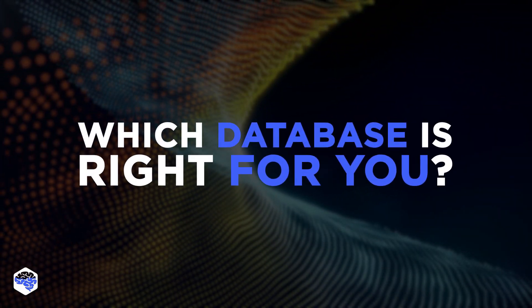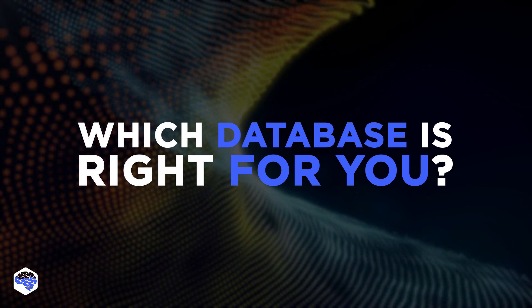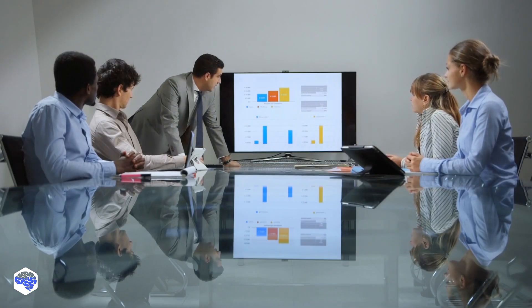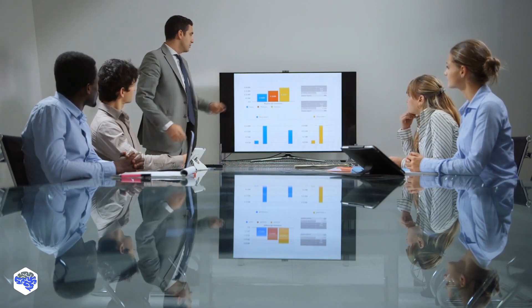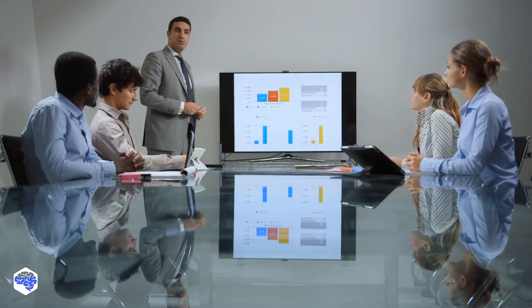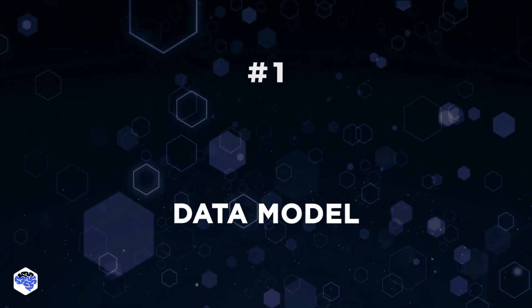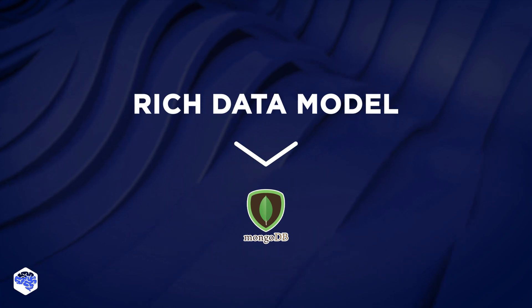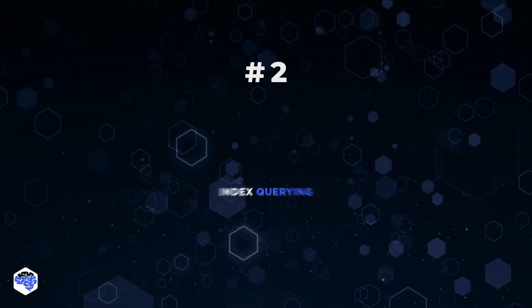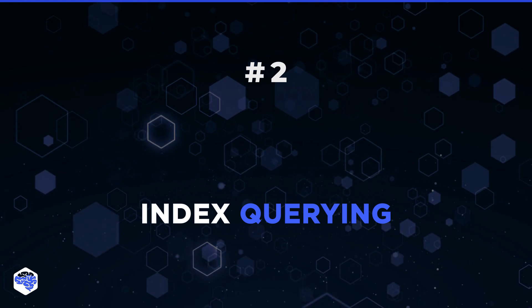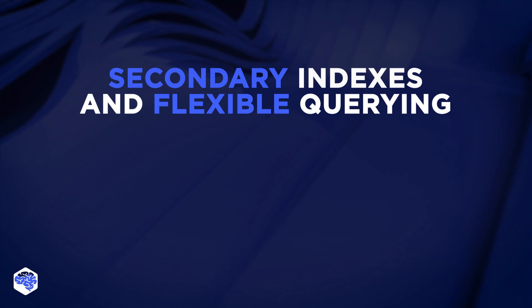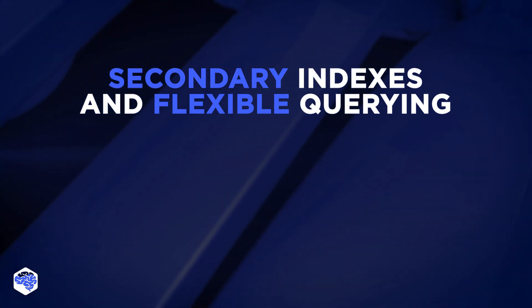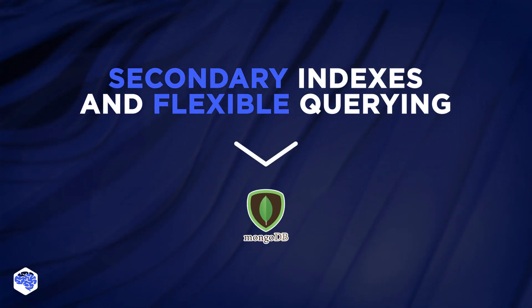Which database is right for your business? We've done a lot of experimenting and collected the most significant points. 1. Data model: if you require a rich data model, MongoDB will be a better choice. 2. Index querying: if most querying in your application occurs by the primary key, Cassandra is a good choice. If secondary indexes and flexible querying by them is a primary requirement, then choose MongoDB.